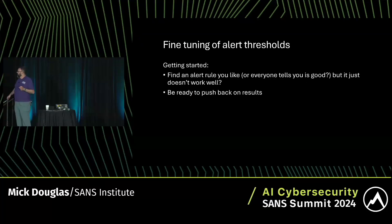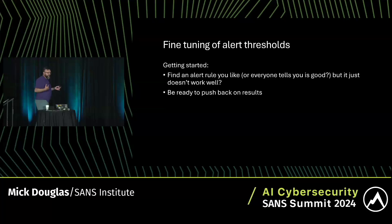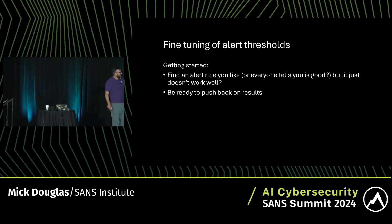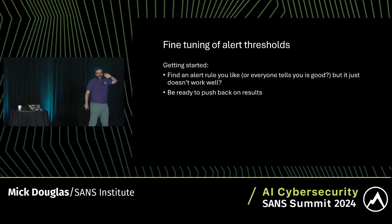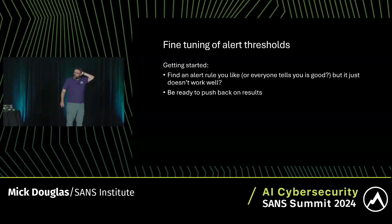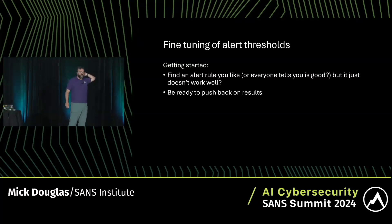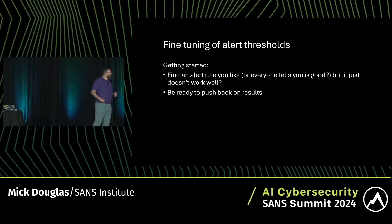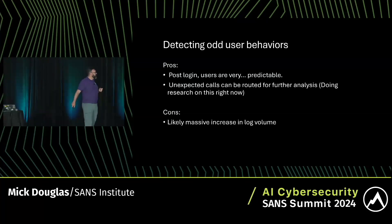To get started, find a rule you like but that isn't performing well. Be prepared to push back on the results, though. Markov chains, more than many algorithms, require you to really think about the data you're working with and understand what the outcome of those logs means.